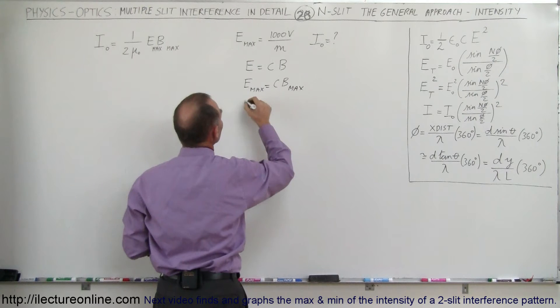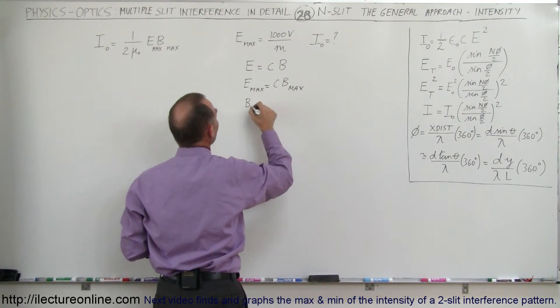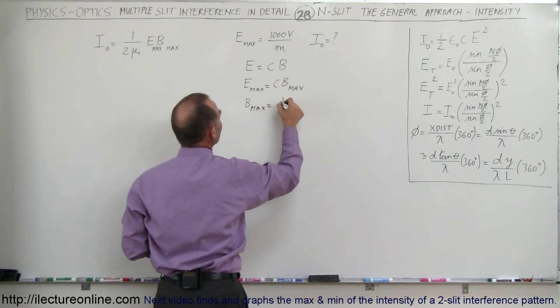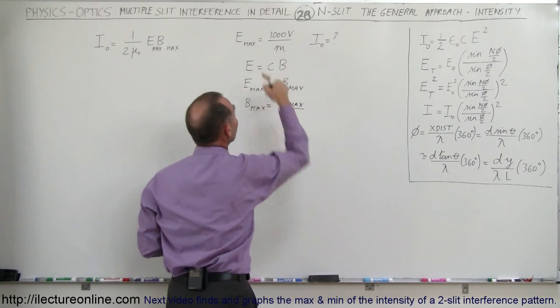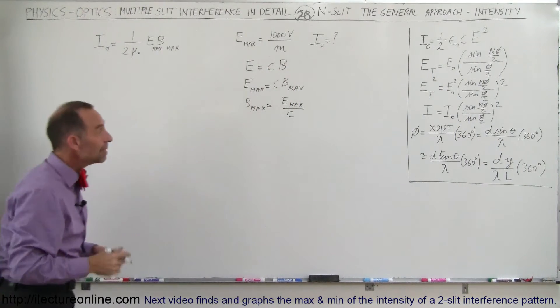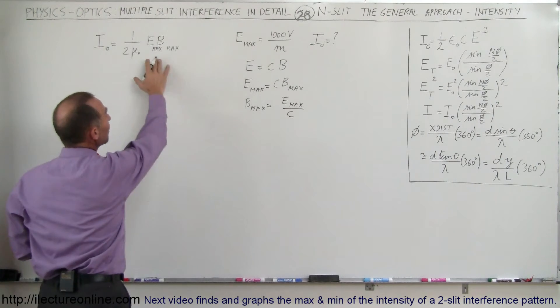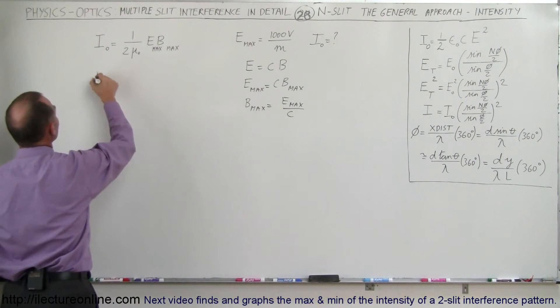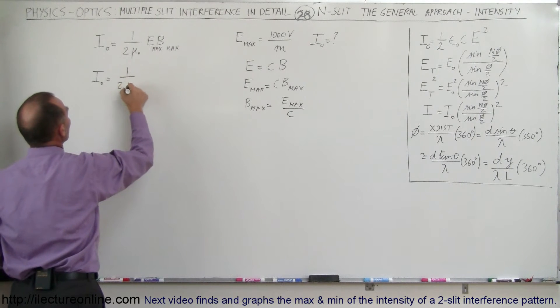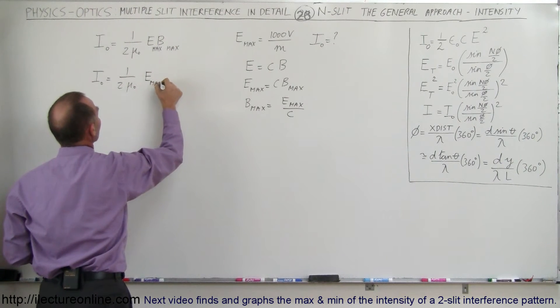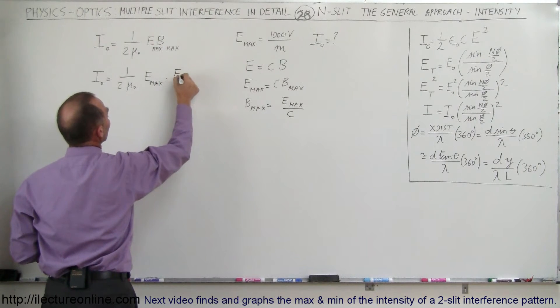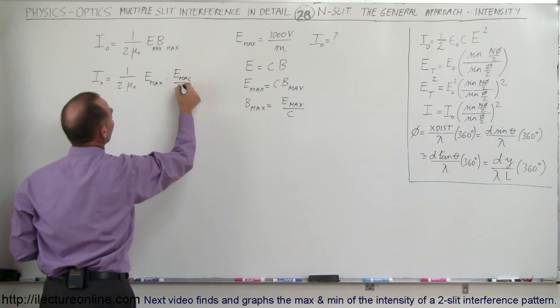Since we don't have B, we can say therefore that B max is equal to E max divided by C. Since we're only given E max and we're not given B max, we can then replace B max by that quantity right there. So the intensity would therefore be equal to 1 over 2 mu sub nought times E max times E max divided by C.